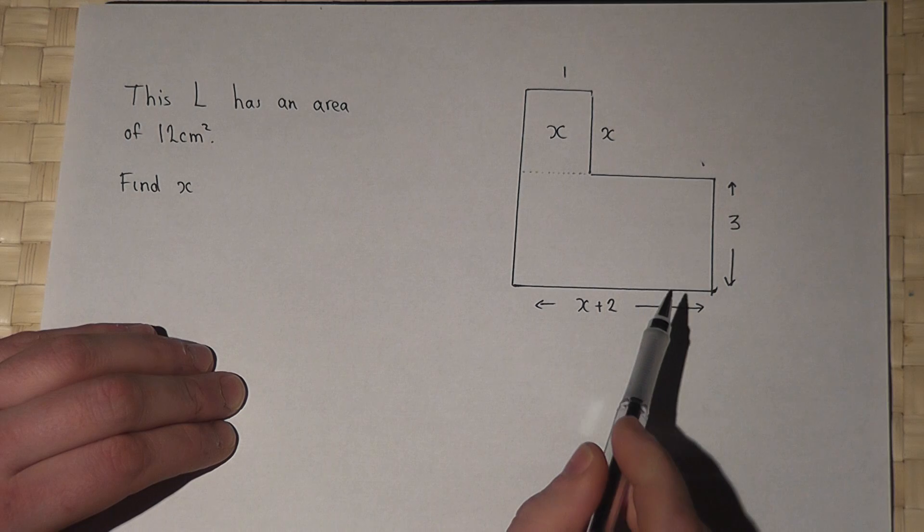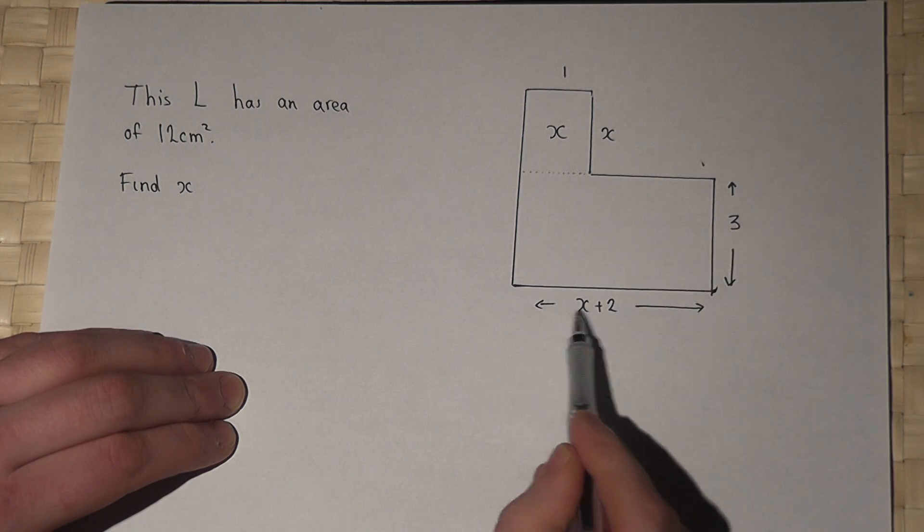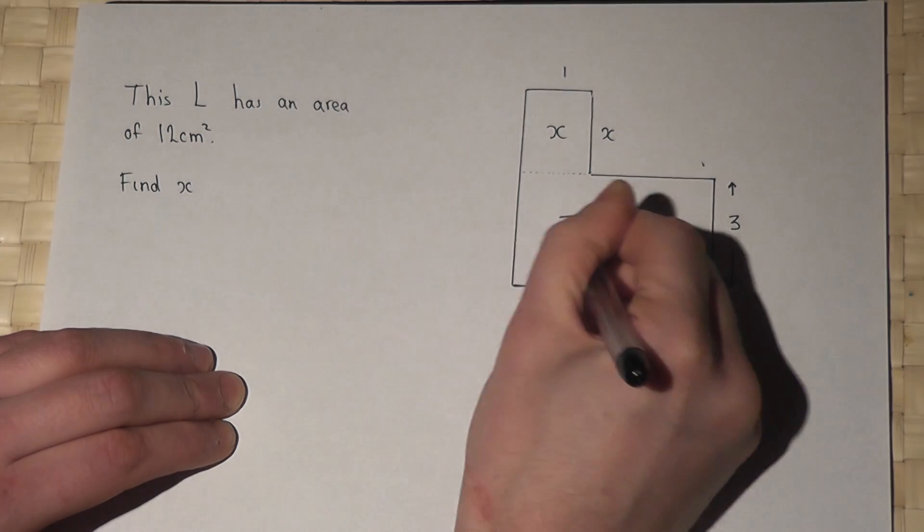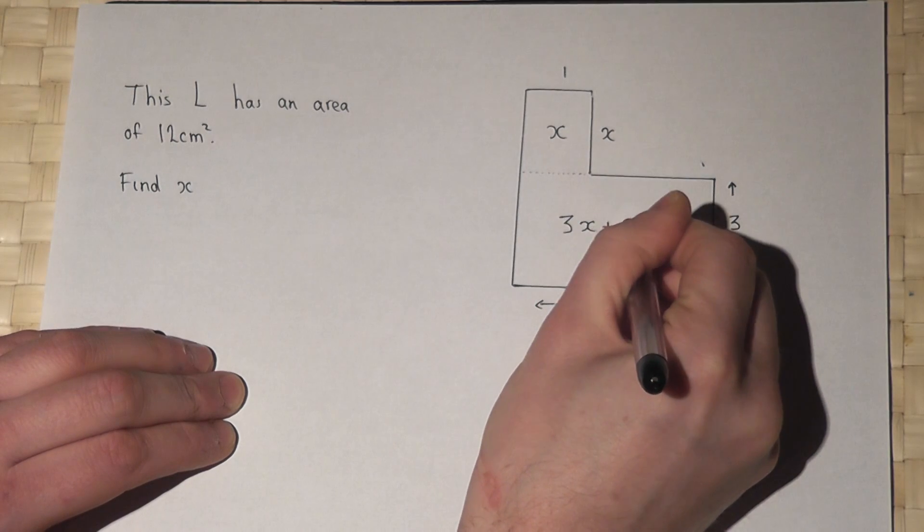And the lower part's got an area of 3 lots of x plus 2, which is 3x plus 6.